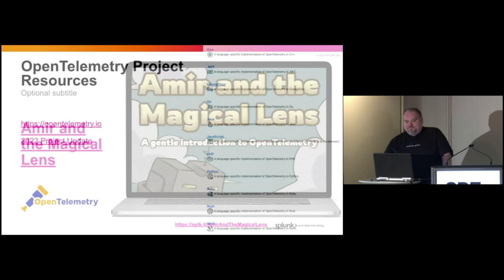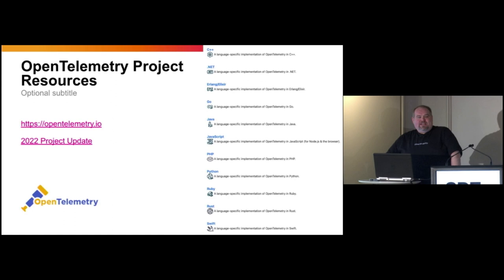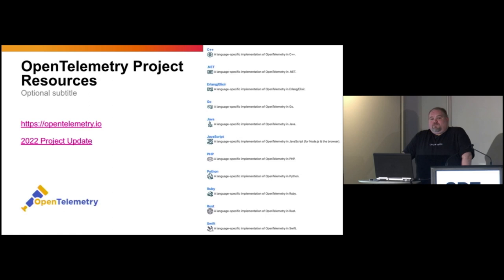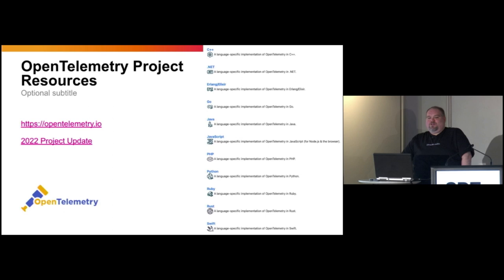There are also resources from the OpenTelemetry project itself. opentelemetry.io is the website for the project. There is a project update that just got published a month ago — like a State of the Union post — that talks about where the opportunities are to contribute and build more things on top of OpenTelemetry. You can see all of the currently supported languages — such hits as Erlang, JavaScript, Ruby, Rust, Swift, and all the ones you would expect. Probably the most mature are Go and Java, which makes sense given where the project came from and where most of the money-making applications live.